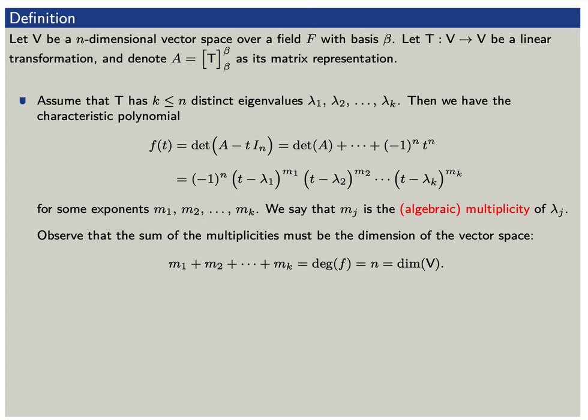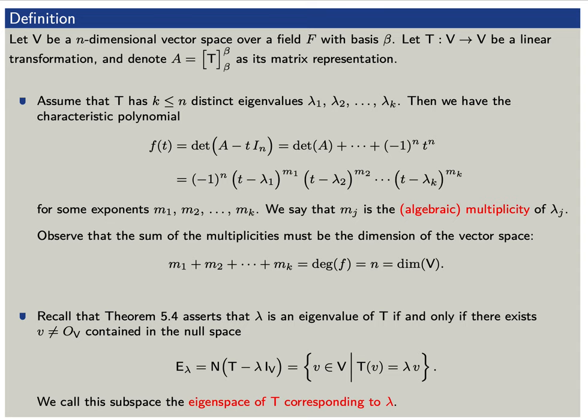Recall that if lambda is an eigenvalue for t, then there must exist a non-zero vector v in the eigenspace E sub lambda — that is, the null space of the linear operator t minus lambda times the identity on V. This is just the collection of vectors v such that t applied to v equals lambda times v. We call this subspace the eigenspace of t corresponding to the eigenvalue lambda.